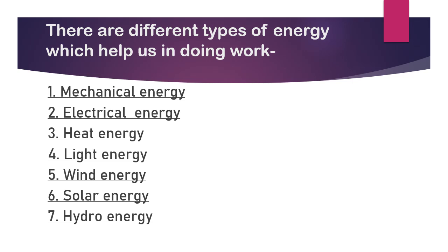Number six: solar energy. Energy that we get from the sun is called solar energy. Solar energy supports life on earth; it is most important for plant growth and human health. Solar energy is used in solar cookers and solar cells, and it is also used to generate electricity. Number seven: hydro energy. Energy we obtain from moving water is called hydro energy. In olden days, people used water mills to grind grains. Now, hydro energy is used for producing electricity by building dams in rivers.